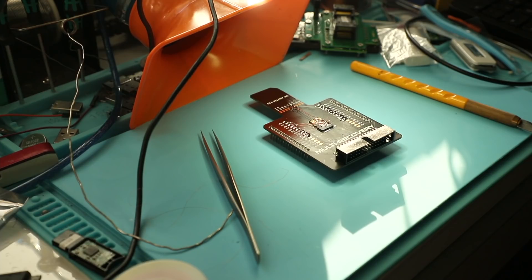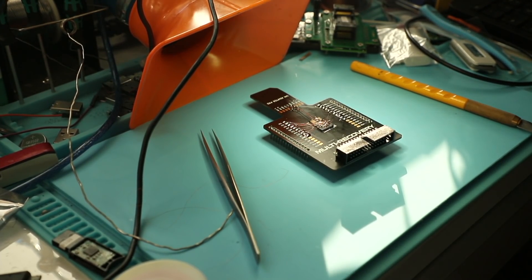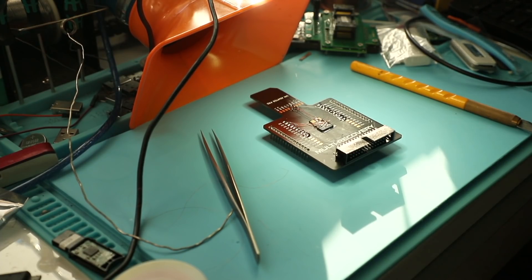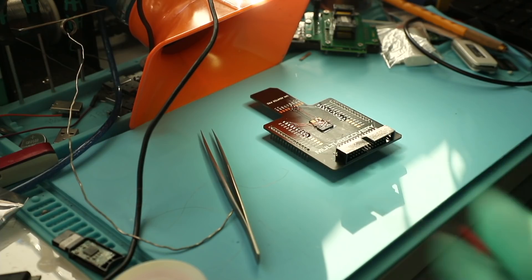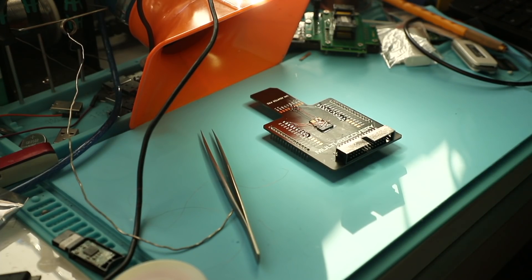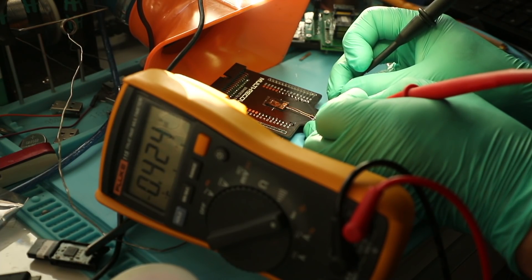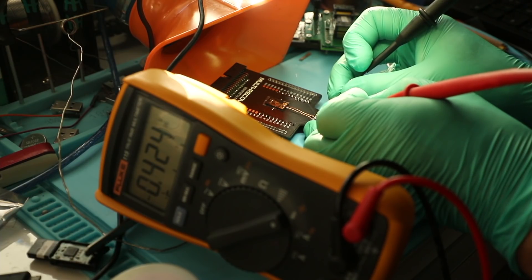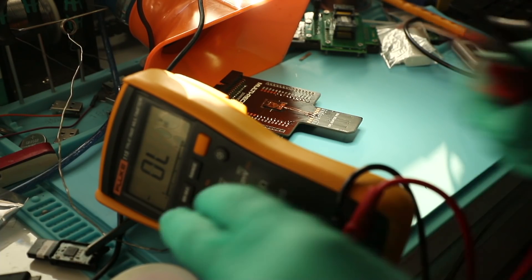The one last step for the manual process is to make sure that we have no short on VCC and VSS. Perfect, 0.4. That's what we need to see there.